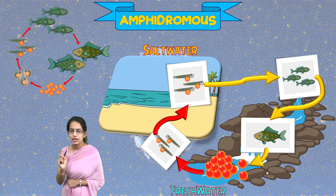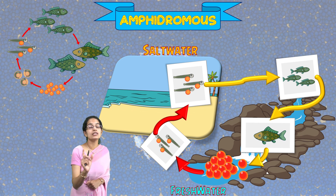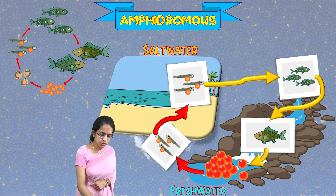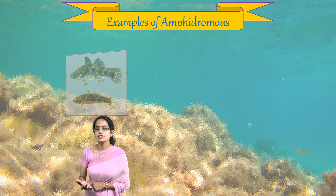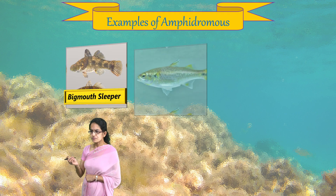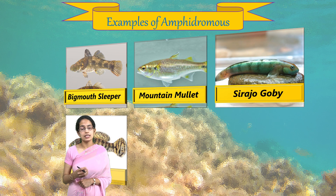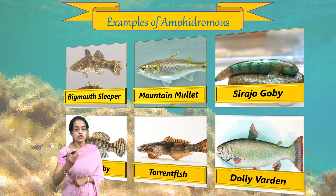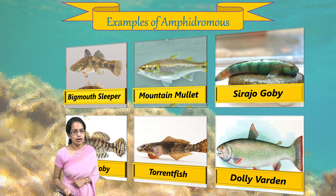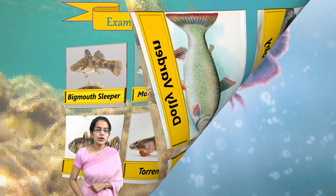Amphidromus species complete all of their life cycle in fresh water except the larval stage, which occurs in salt water. Some good examples of Amphidromus species are the Big Mouth Sleeper, Goby — specifically the River Goby and the Siraju Goby — Torrent Fish, Mountain Mullet, and Dolly Varden.